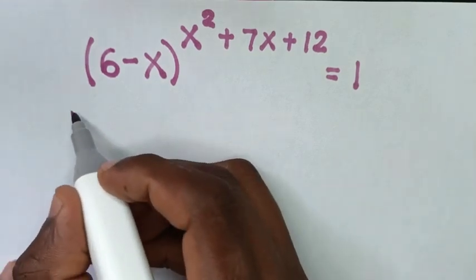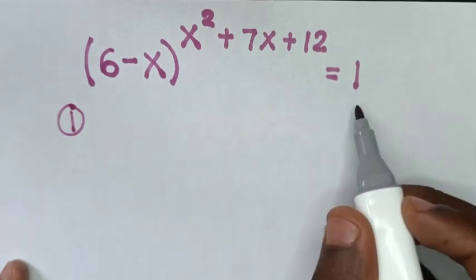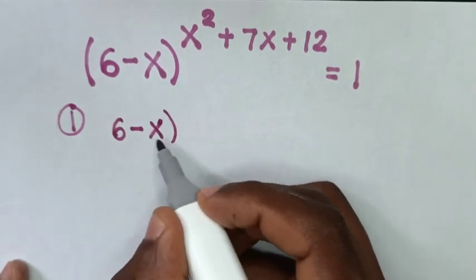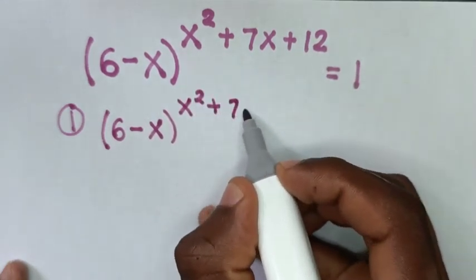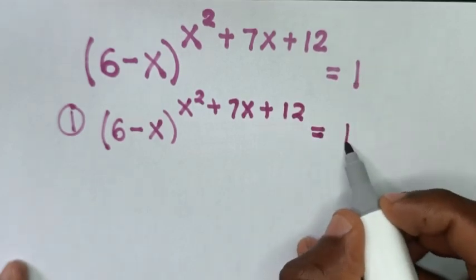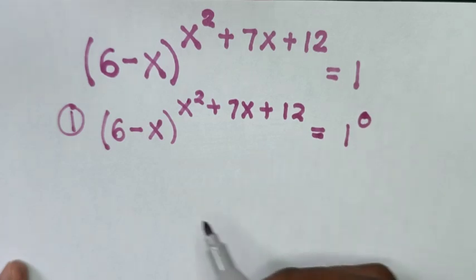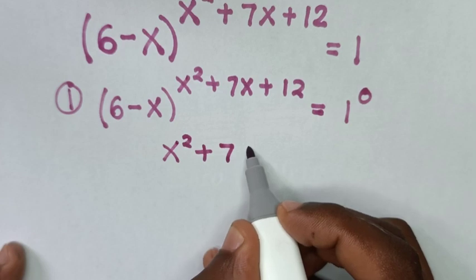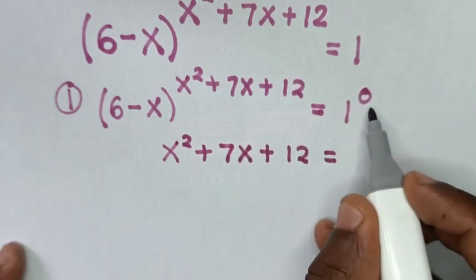Now, in the first step, 1 is the same as 1 to the power of 0. So our equation (6 minus x) to the power of x squared plus 7x plus 12 equals 1, is the same as 1 to the power of 0. We'll compare the powers, so x squared plus 7x plus 12 is equal to 0.